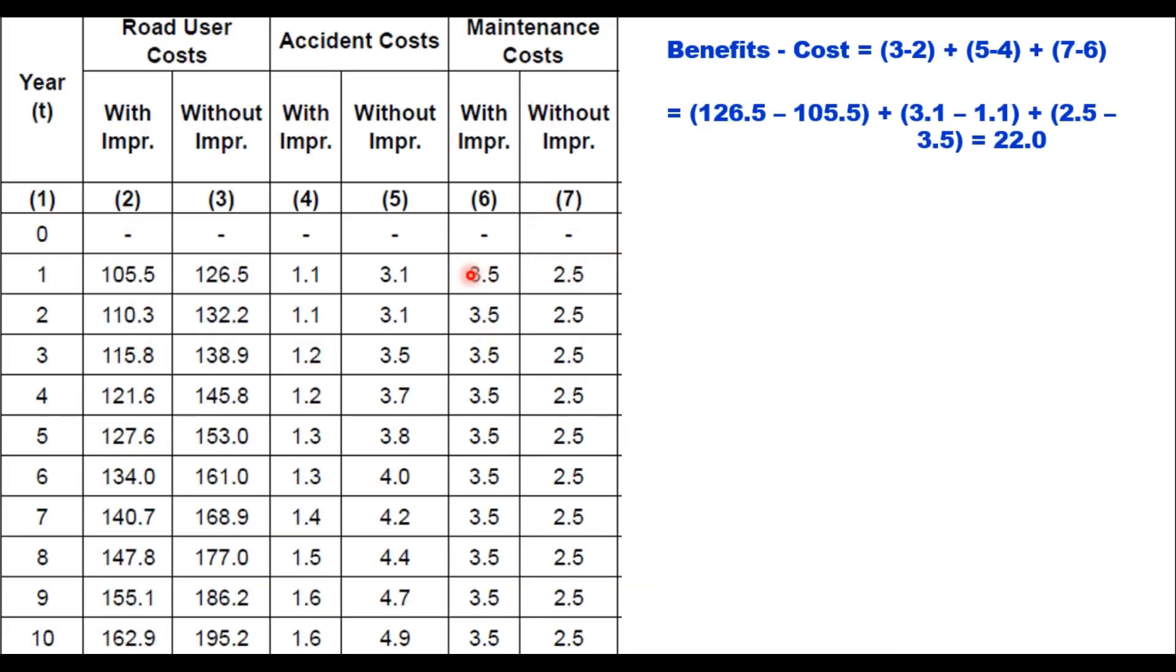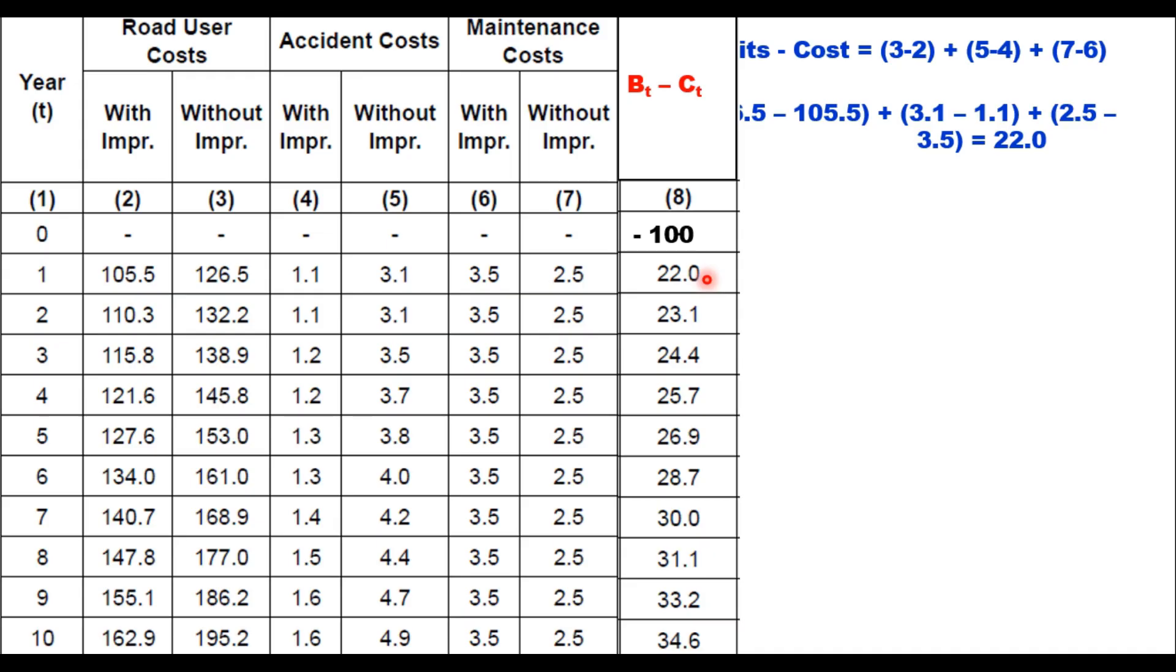Now benefit here in this table, if you look at the benefit, benefit minus cost. Now benefit is columns 3, 5 and 7. If you do not do any improvement then 126.5 minus 105.5 is the benefit minus cost. Similarly 3.1 minus 1.1 is the benefit minus cost. And similarly column number 7 minus 6 is the benefit minus cost for maintenance. So this value, if you add a column here, this value 22 is basically 126.5 minus 105.5 plus 3.1 minus 1.1 plus 2.5 minus 3.5, that is 22 lakhs. Similarly, you calculate for each row for each year.